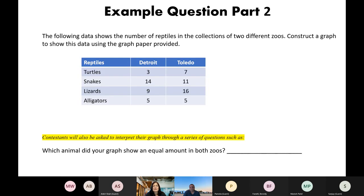Now let's go over an example of part two. So this is how a set of data will be presented to them. There'll be a couple sentence story about what the data is about. And then there'll be data presented in a table like this. And then of course, they'll have a whole separate sheet of graph paper to construct the graph on. Additionally, as I mentioned, there'll be some questions to answer that are relative to the graph that they draw. And here's an example of one of those questions. Which animal did your graph show an equal amount in both suits?